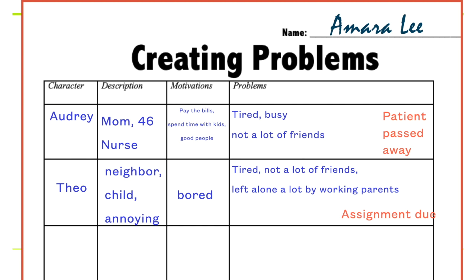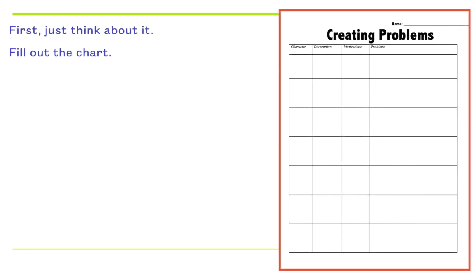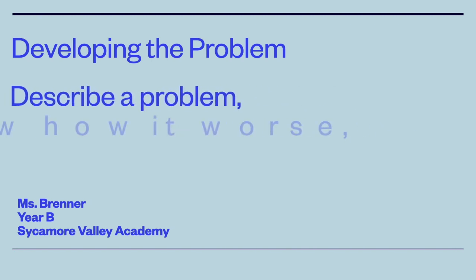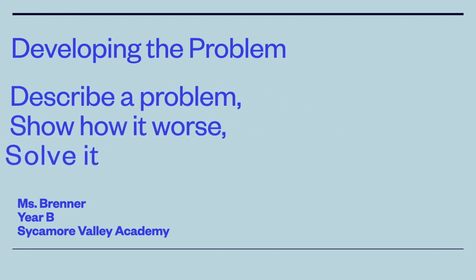I just randomly picked these characters. You can pick any characters, describe them in any way, figure out what they want, and what kind of problems they could encounter in your story. You're going to think about it and fill out the chart in your own way. You don't have to do any writing yet unless you're inspired — all you need is this chart filled out. You should have at least two major characters and altogether five characters; the other three can be minor characters. Fill out this chart and then you are ready to do the writing in the next video, where we will describe the problem, show how it gets worse, and solve it. See you next time.